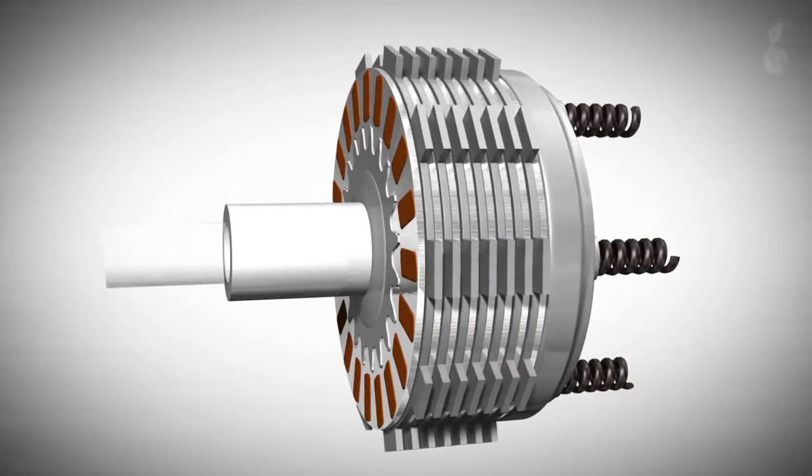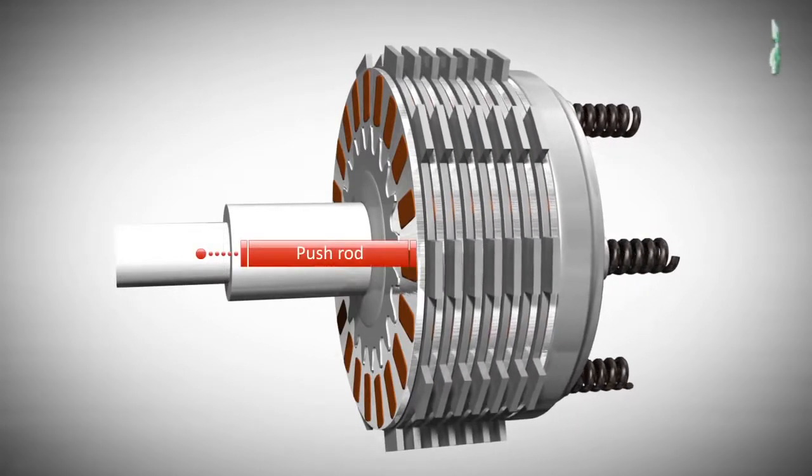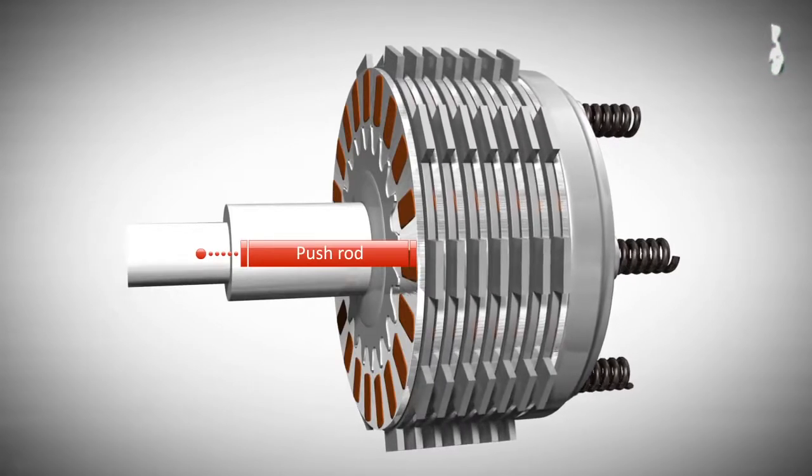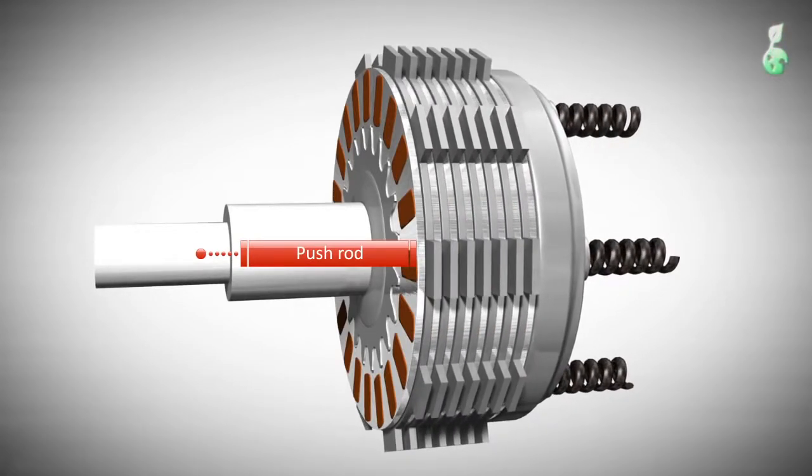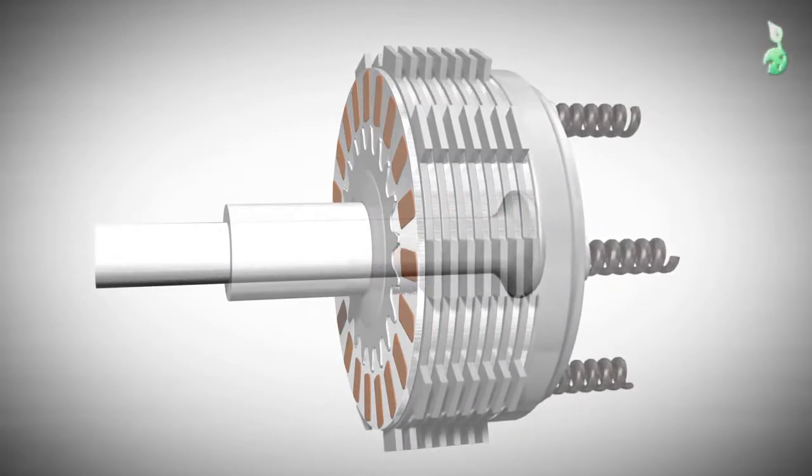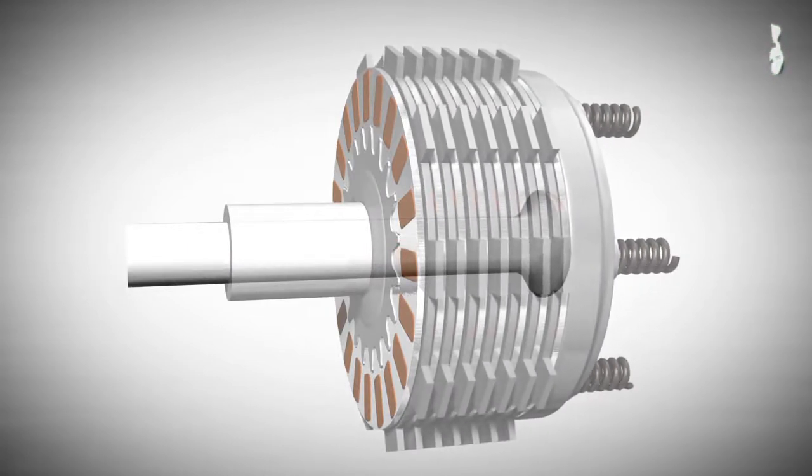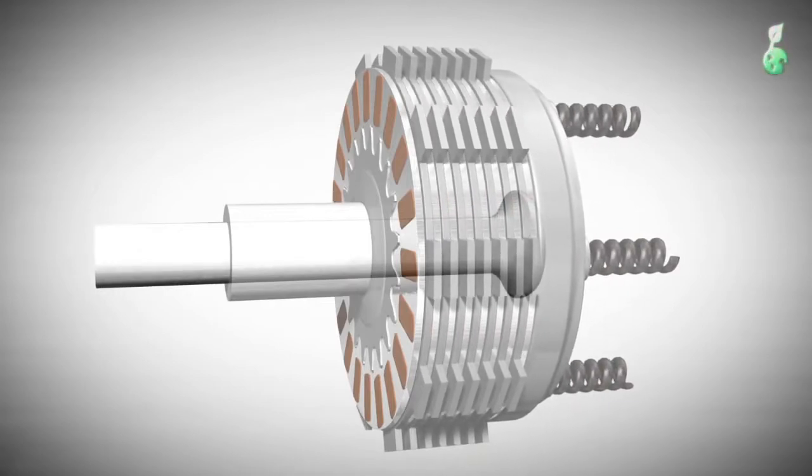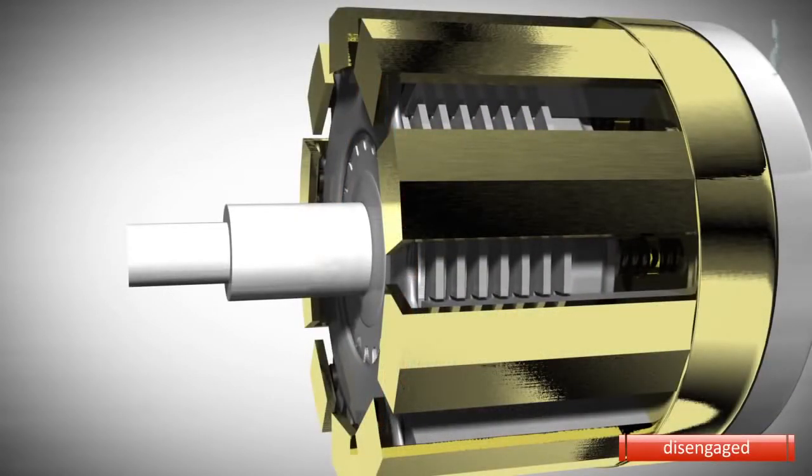Applying pressure to the pressure plate and the coil springs from the other side will release the pressure on the clutch pack. This is usually done by a push rod. This push rod may be connected to a clutch lever that the rider of a motorcycle can use to disconnect the transmission from the engine.